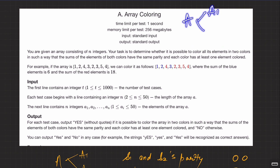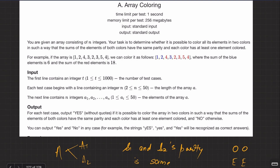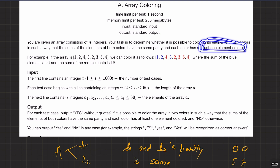You have array A and you want to divide it into two non-empty parts — non-empty is an important constraint. The sum of all elements in both parts should have the same parity. Each color must have at least one element colored. So in the worst case you can just put one element in one partition.